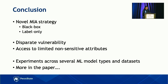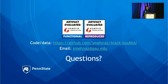To conclude, we designed a novel model inversion attack strategy for black box access with label-only output. We showed the disparate vulnerability phenomenon and also demonstrated robustness when reducing the adversary's non-sensitive attribute access. We experimented with different ML model types to check generalizability — there are many more results in the paper. The code, datasets, and all models are available on our GitHub, and the artifact is evaluated for being functional and reproducible. Thank you all for listening — please feel free to email me with any questions.